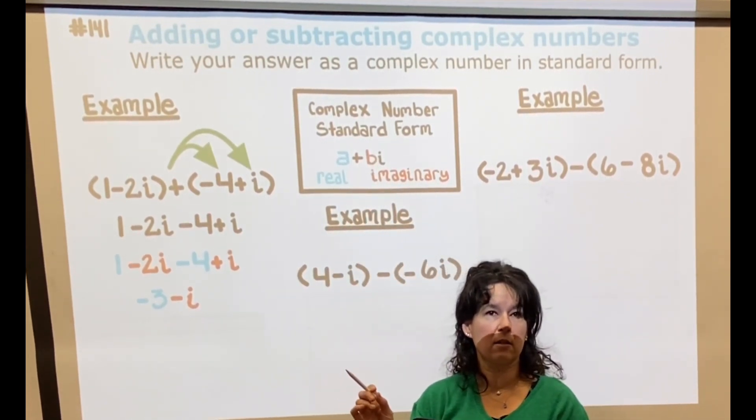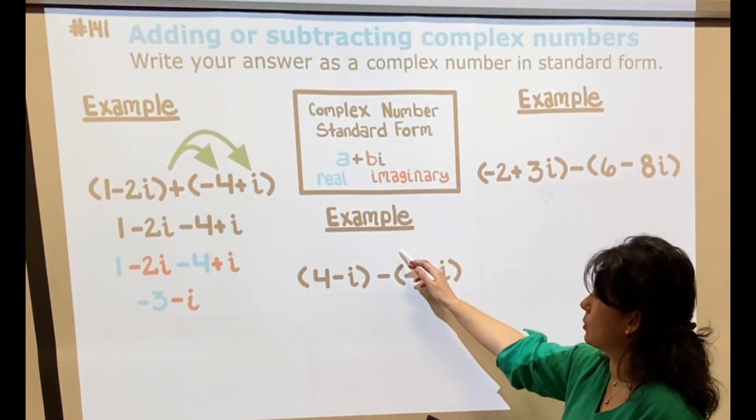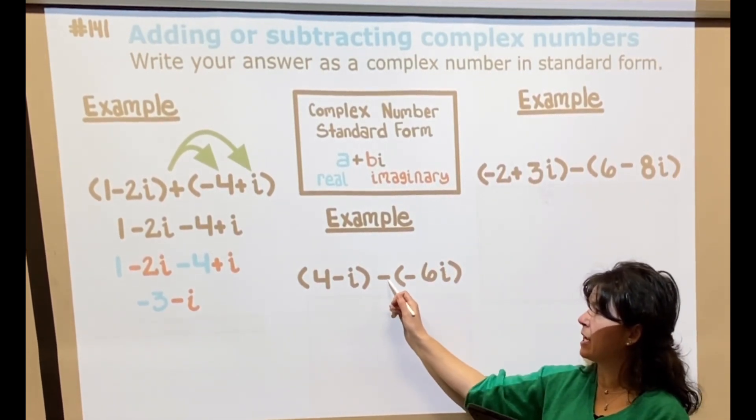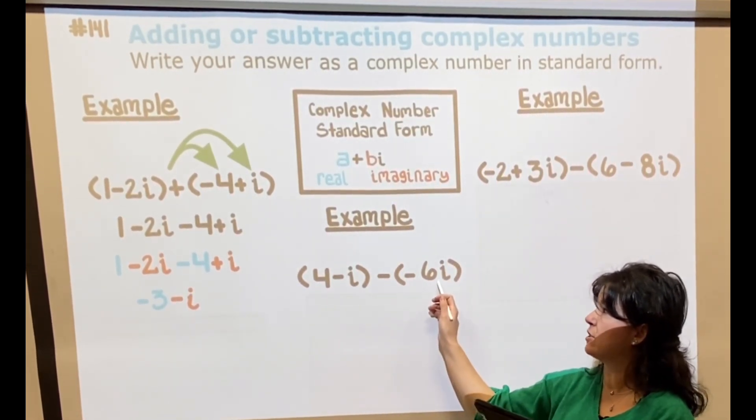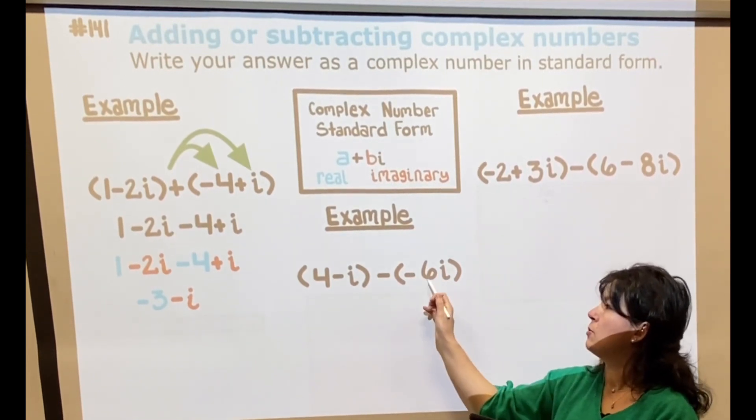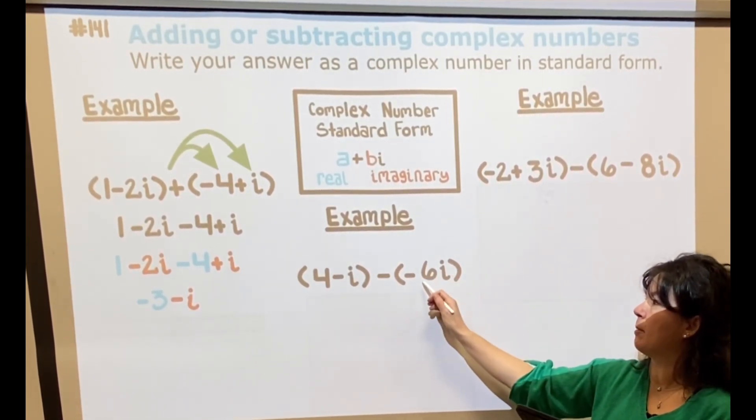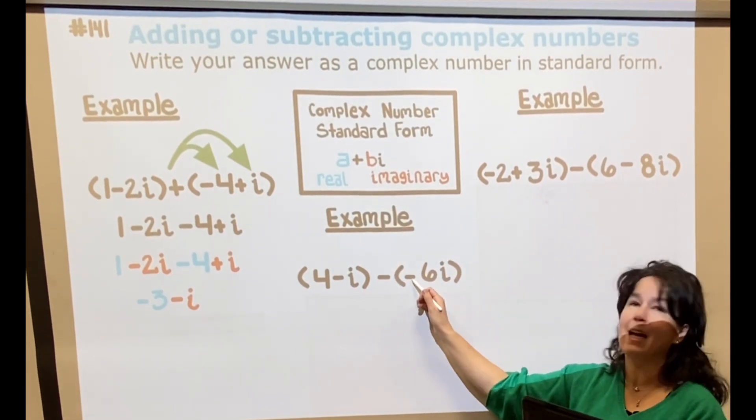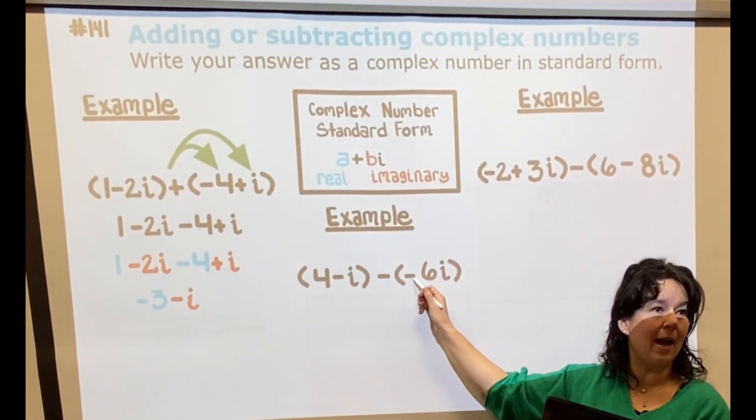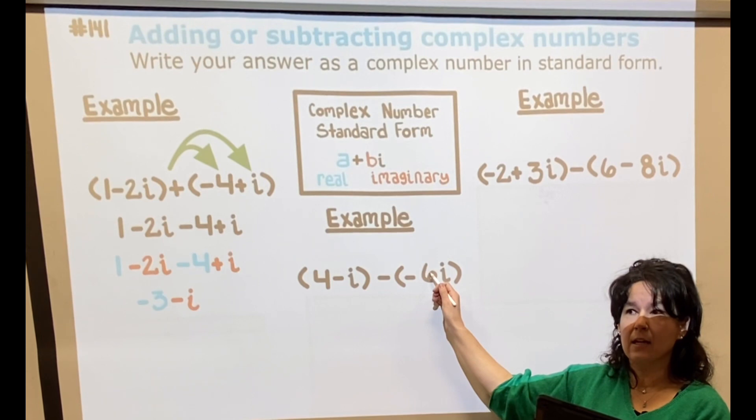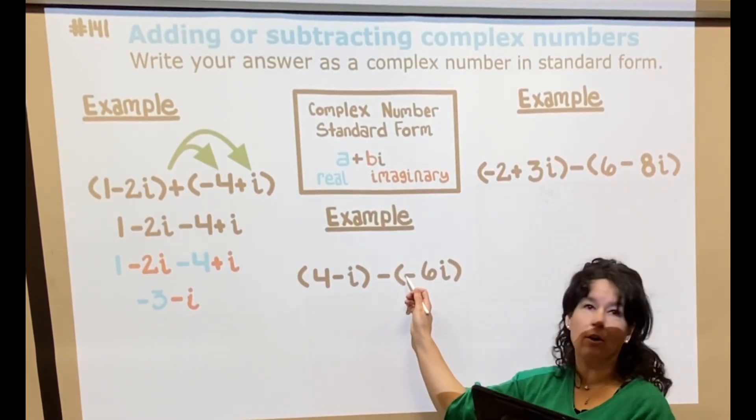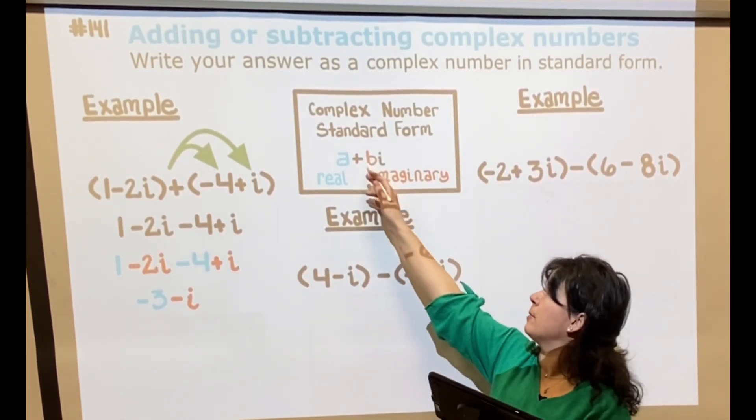So for this one here, I have the negative in the middle, so I'm subtracting these two complex numbers. You may wonder, like, why is that one a complex number if it's a plus bi? But technically I have 0 minus 6i, and so the a would be 0 and the b would be negative 6.